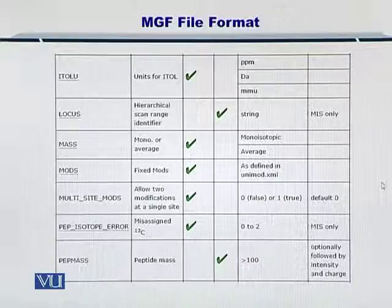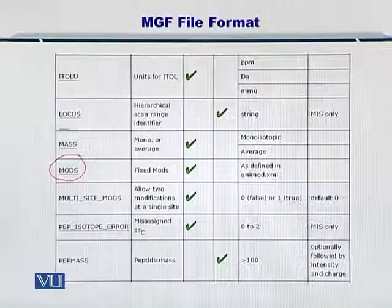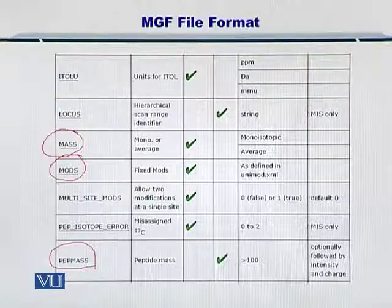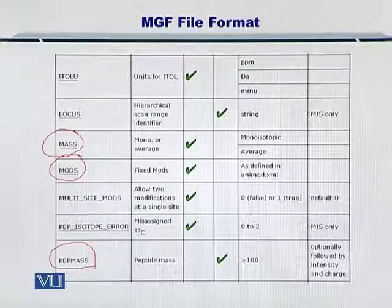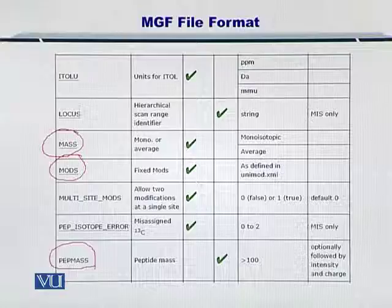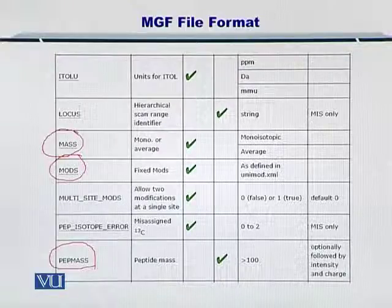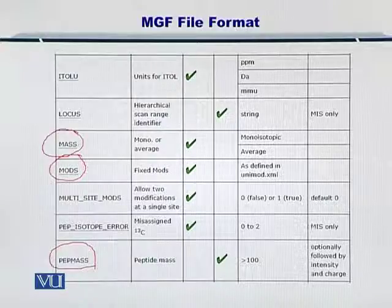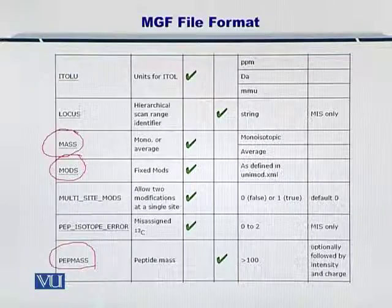Moreover, you can have attributes such as mods, mass, and pep mass. In the mass attribute, you specify the monoisotopic mass or the average mass, whichever you want to use in the search for the molecule. The mods include the fixed modifications and the post-translational modifications that may be present on your protein. The pep mass is the peptide mass, which you can specify if you are looking for peptides.